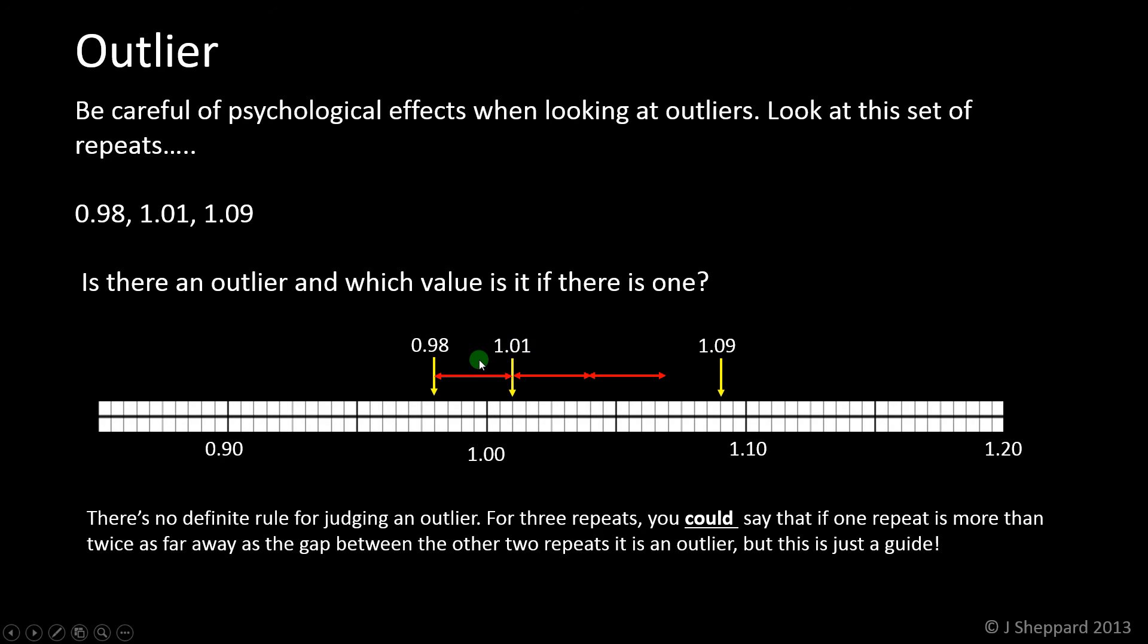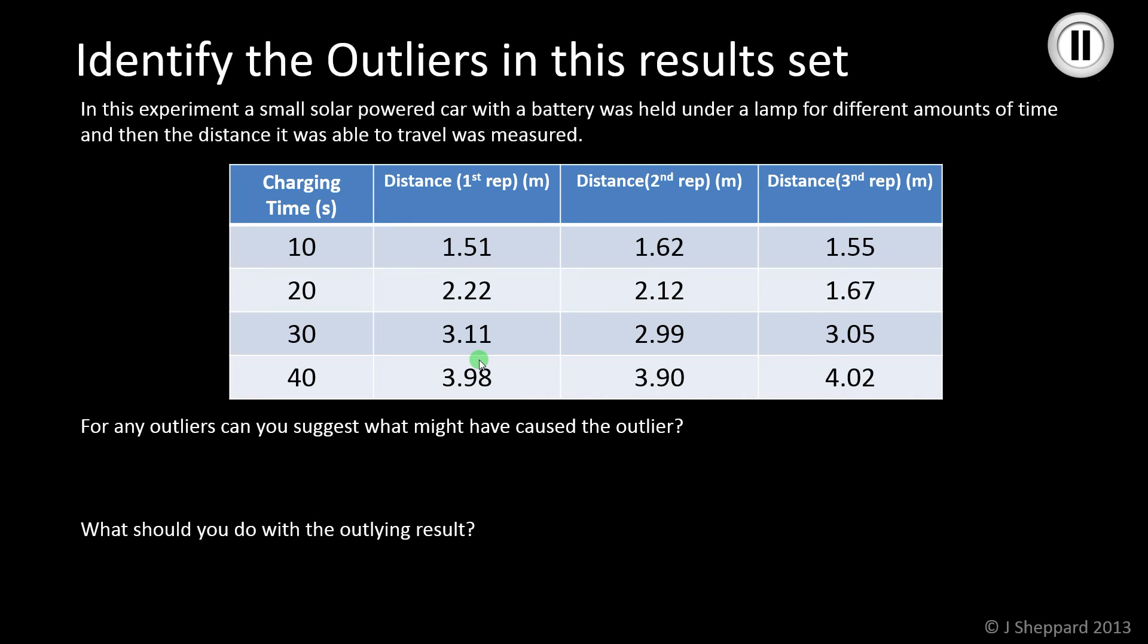There's no hard and fast rule about outliers. Whenever you identify one, you've got to justify why you think it's an outlier and what you think went wrong. That's really important, and redo it. Pause the video, have a look at this table, see if you can work out where you think the outliers might be in this data set and what you would do with the outlier result when you found one.